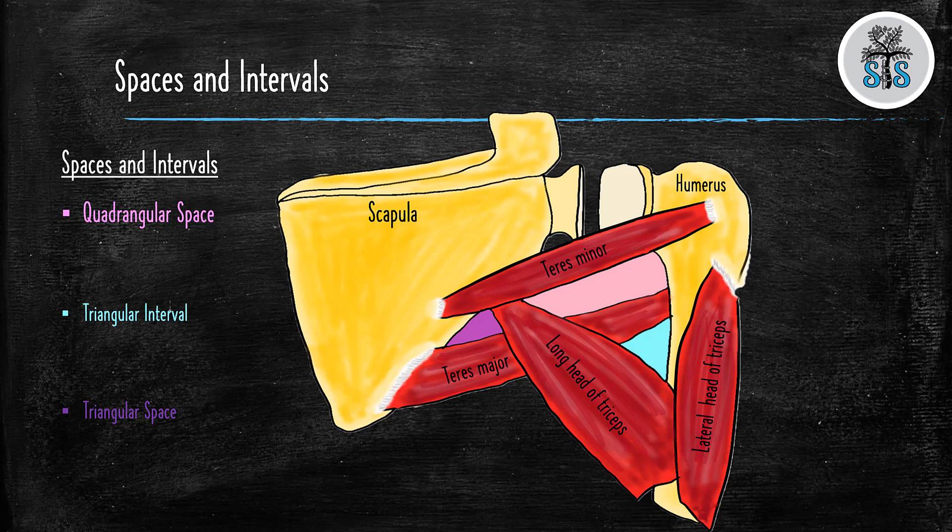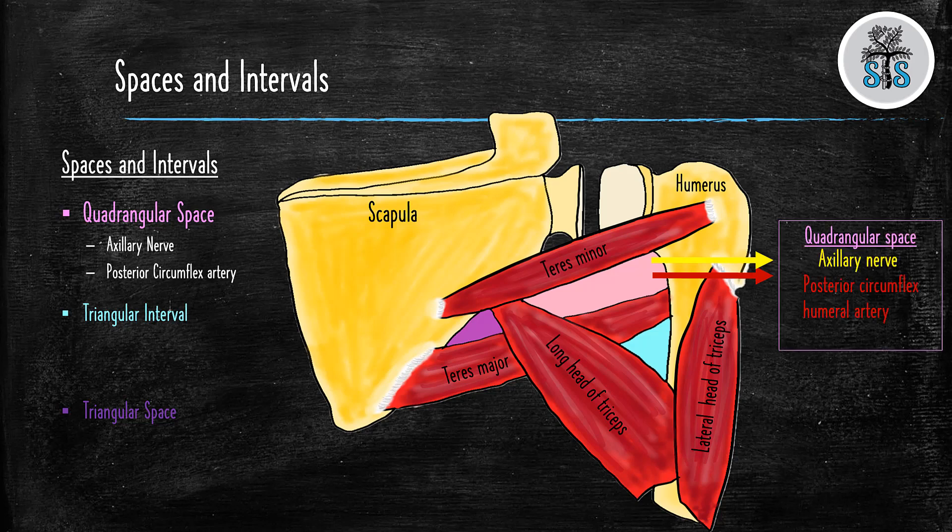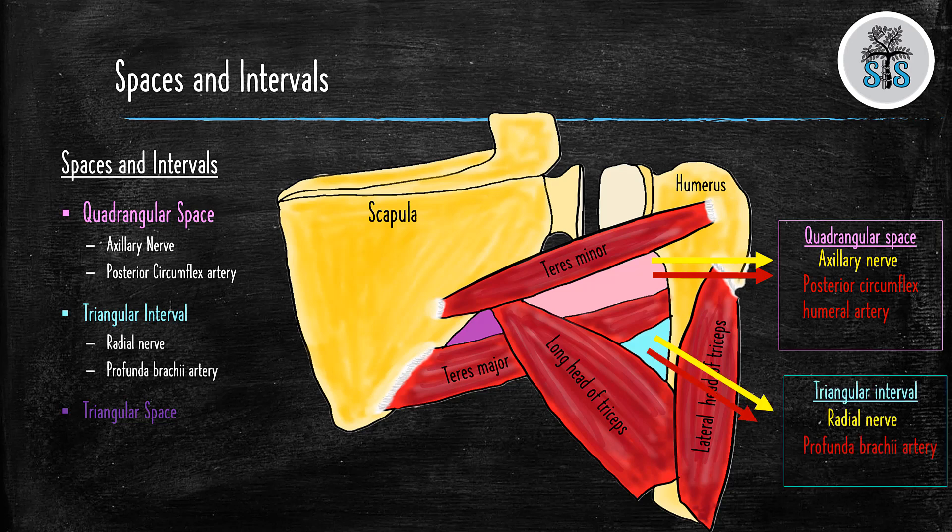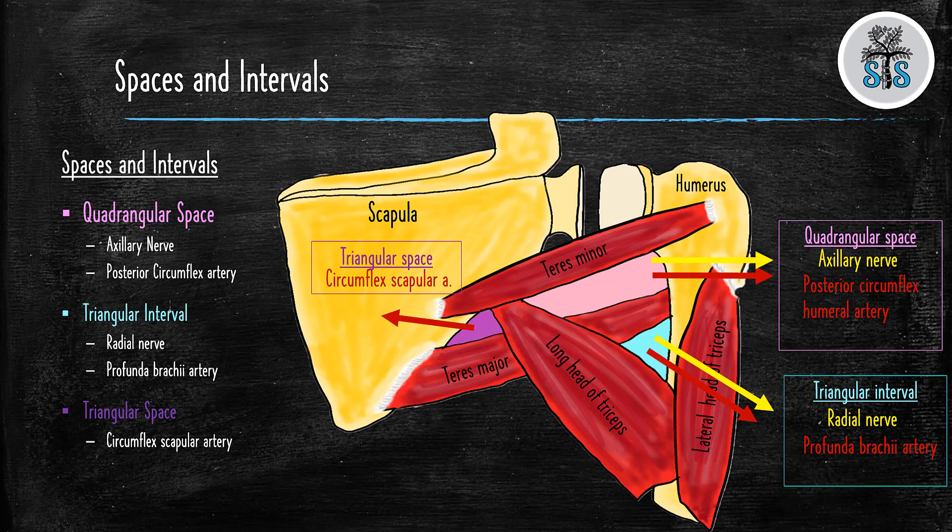But now do you know which goes through each? So, the quadrangular space is going to contain the axillary artery and the posterior circumflex humeral artery. The triangular interval has the radial nerve and the profunda brachii artery. And the triangular space has a circumflex artery. If you get mixed up between which is the interval and which is the space for the triangular interval and space, just remember that triangular space, the S in space, is the same as the S in scapula. And the only thing going through the triangular space is the circumflex scapular artery.